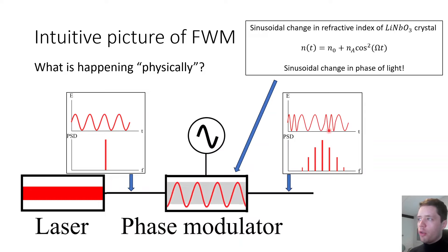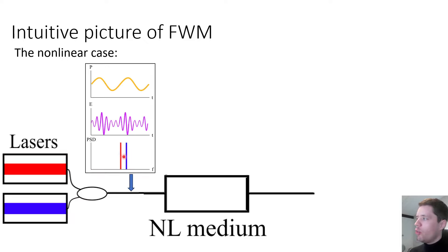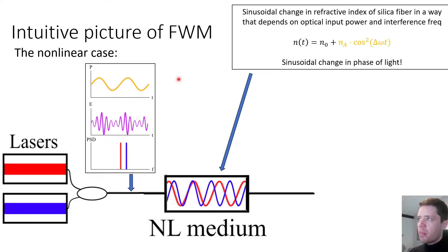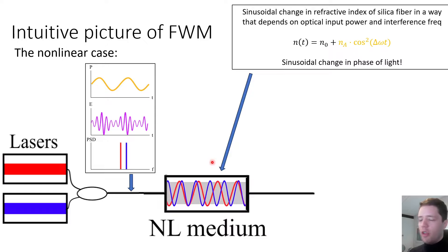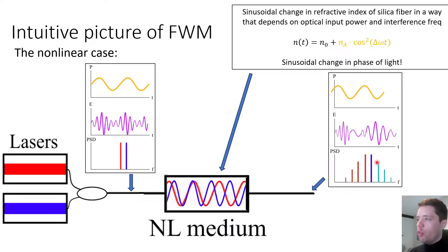When that happens, we introduce new frequency components because the phase is being altered in the time domain. Something similar happens in four-wave mixing, but instead of an external voltage, it's the interference of two lasers that causes the change in refractive index. Launching these two lasers into the medium causes a temporal variation in average optical power. If there is a chi-3 nonlinearity, the change in power over time alters the refractive index, which alters the phase of the propagating light — generating new frequency components called the four-wave mixing products.